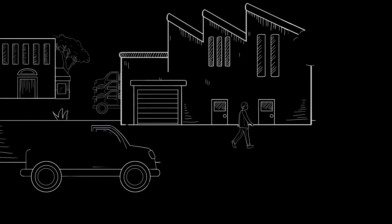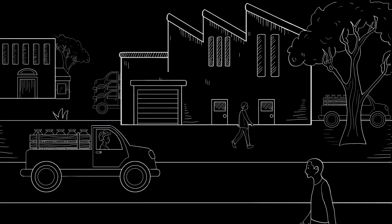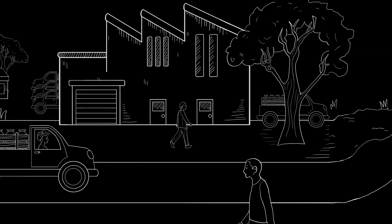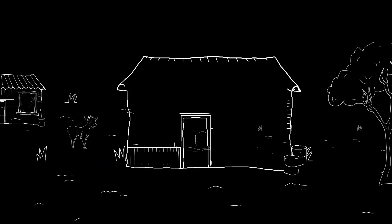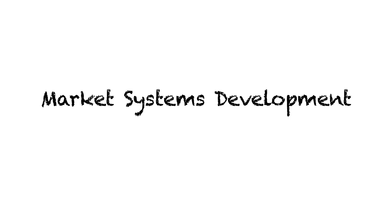If you've heard of market systems development, you might be asking, what does it mean? What's business or private enterprise got to do with reducing poverty? And how does this compare with more conventional aid? Let's shed some light and start with an example.